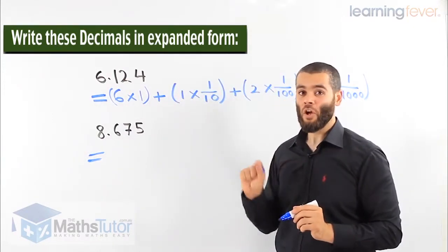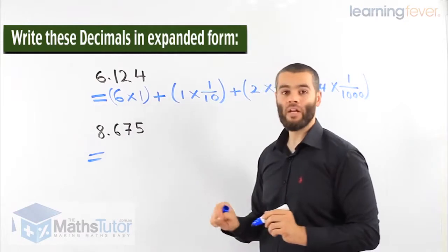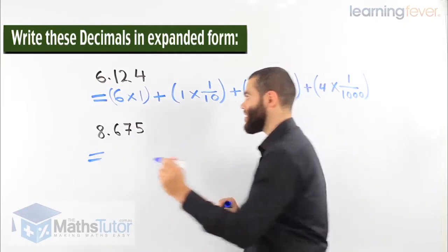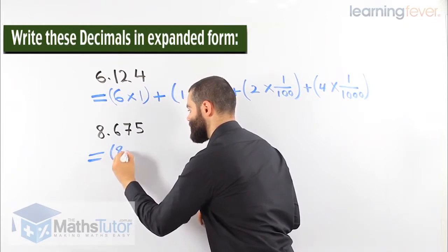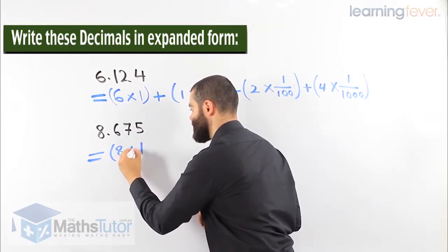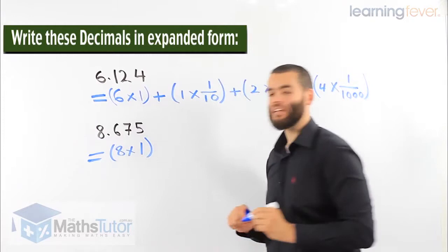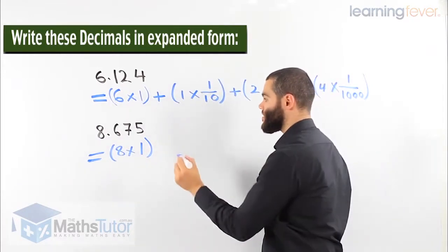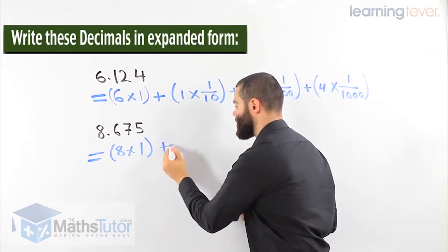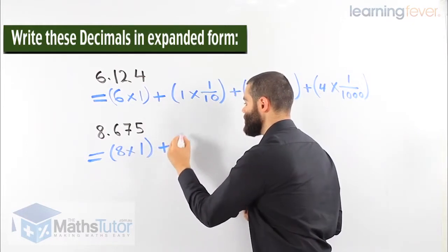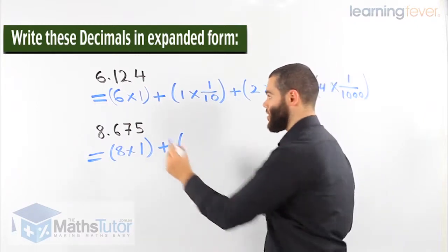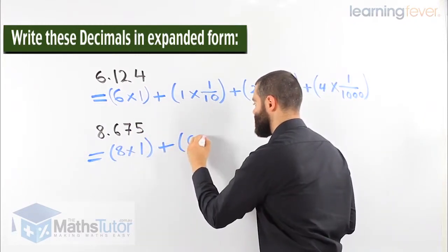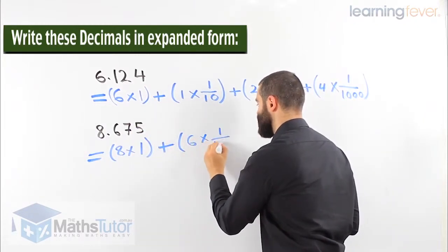So I ask myself, what place value does the first number have? The 8 in this case is in the ones. So it's 8 times 1. That's completed. Then I notice there's a decimal point. So I'm going now to the tenth column. 6 times 1/10.